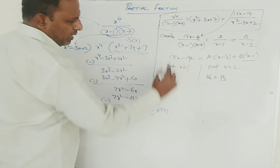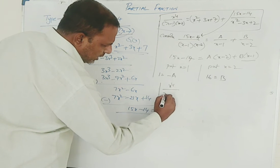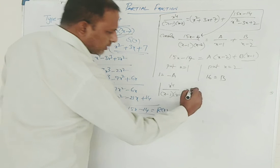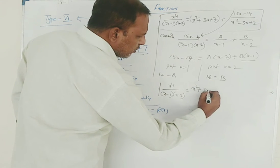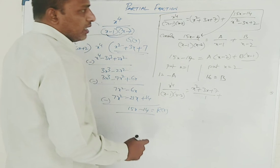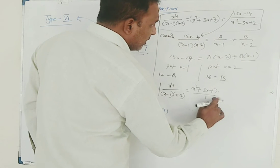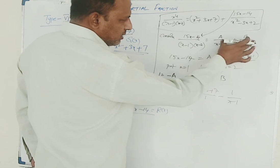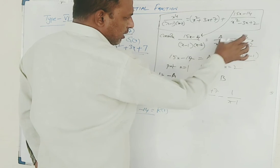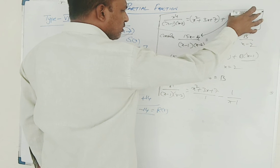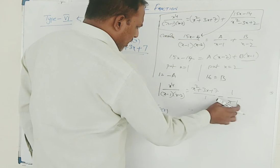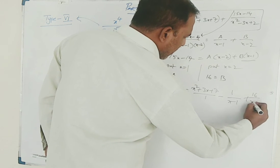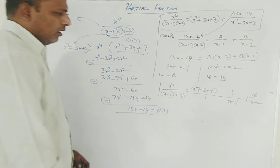Therefore, x to the power 4 by x minus 1 times x minus 2 can be written as x squared plus 3x plus 7 plus minus 1 by x minus 1 plus 16 by x minus 2. This is the complete resolved partial fraction for this Type 6 example.